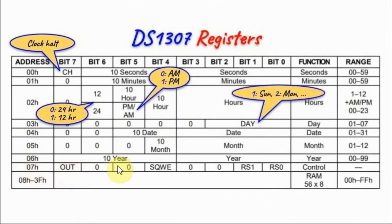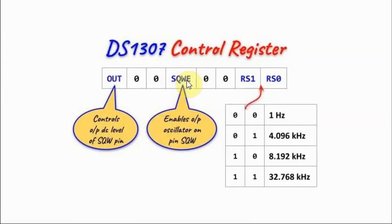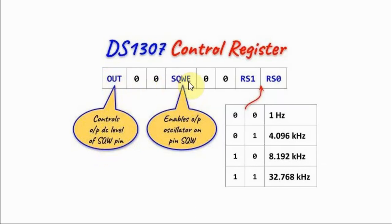Location 07 is the control register, which programs a square wave output at the IC's SQW pin with a programmable frequency. When the oscillator enable bit is set, it enables the output at pin SQW, and the frequency — either 1 Hz, 4 kHz, 8 kHz, or 32 kHz — is determined by two bits based on a truth table. Another bit determines the DC output level at SQW when the square wave is disabled: 1 means logic high, 0 means logic low.